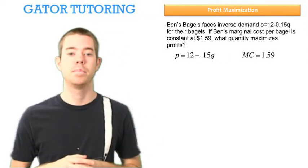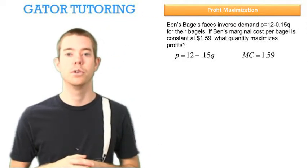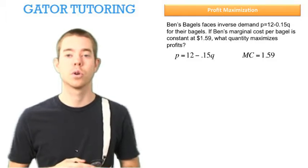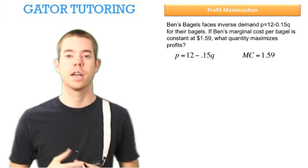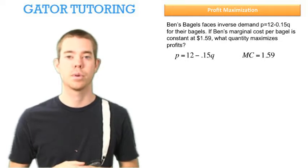Ben faces inverse demand P equals 12 minus 0.15Q for his bagels. If Ben's marginal cost per bagel is constant at $1.59, what quantity maximizes profits?